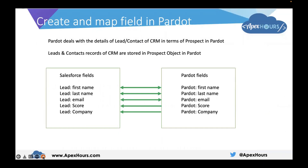Pardot deals with the details of the lead and contact object of CRM in terms of the prospect object in Pardot. So whatever records or data we have in the lead and contact object in CRM is going to be stored in the prospect object of Pardot. Now let's talk about the field mapping between CRM and Pardot — leads and contacts are mapped with the prospect object fields.